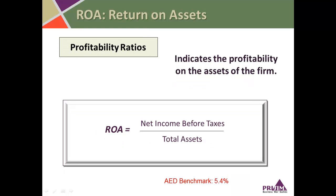Return on assets is another profit ratio that shows how the assets of the business are generating profit. It's calculated as net income before taxes divided by total assets. The AED has 5.4% as a benchmark for a heavy equipment distributor, meaning you're generating 5.4 cents in net income before taxes for every dollar of total assets.